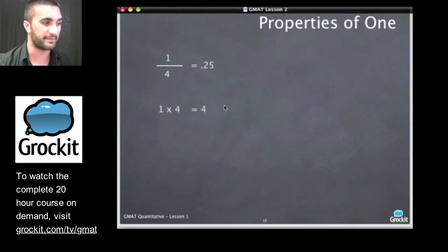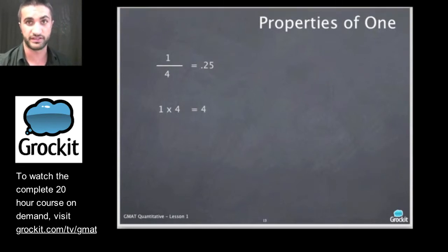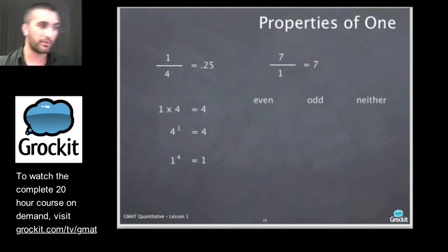1 divided by 4 should give us 0.25. We're using the same examples. 1 times 4 is 4. 1 times anything is itself. 4 to the 1 is 4. Anything to the 1 power is itself. 1 to the 4 is 1 because 1 times 1 times 1 times 1 is still 1. We can divide by 1 all we want. We can't divide by 0, but we can divide by 1 and we get the number that we are dividing with.